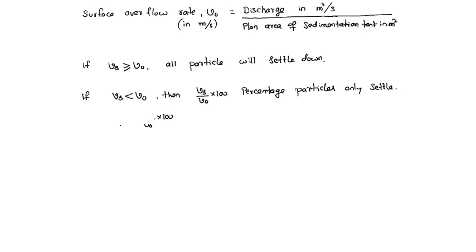So efficiency in percent equals (Vs / V0) × 100. If efficiency is less than 100%, we can use Vs to find V0 and then calculate the plan area of the sedimentation tank required. Based on that, the design can be done. This is the principle of the sedimentation tank.